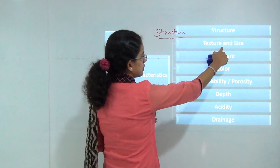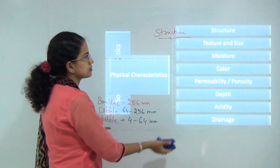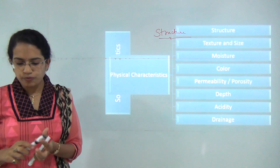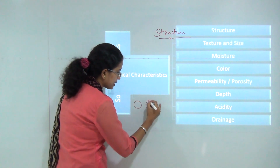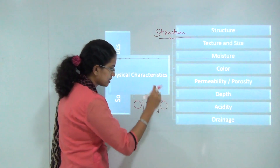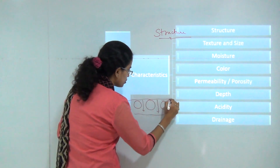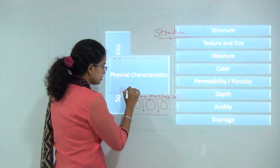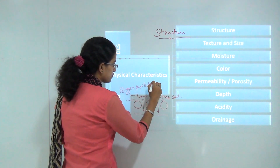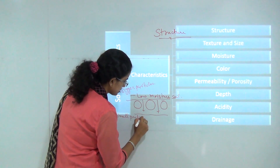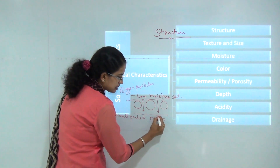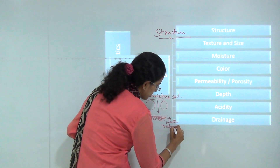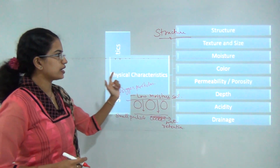Texture and size have already been covered. Next is moisture content in the soil. Moisture content is affected by how porous the soil is. Where particles are bigger there are large pores, water penetrates deeper, and there is low soil moisture. Where there are small particles, they are closely packed so water penetration becomes difficult, resulting in more water retention.